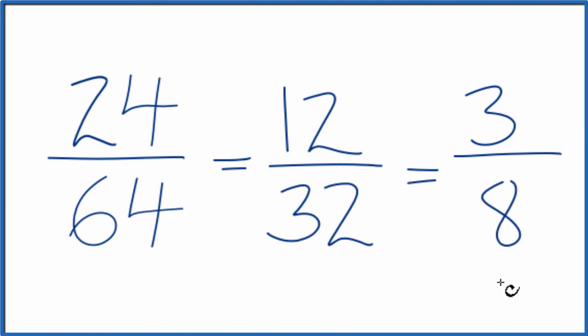And we can't reduce this any further, so we've simplified the fraction 24/64 down to 3/8. If you knew that 8 was the greatest common factor for 24 and 64, you could skip this step and end up with 3/8 just the same way. But this way works just as well. This is Dr. B, and thanks for watching.